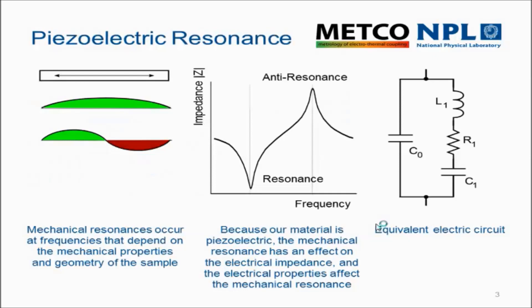So piezoelectric resonance — mechanically, if you take a piece of ceramic, it will have a number of mechanical resonance modes that depends on the mechanical properties of the material and its dimensions. Because it's a piezoelectric material, there's a coupling between the electrical and mechanical regimes, so at certain frequencies those resonances can be excited electrically and may have an effect on the electrical impedance. If we do a frequency sweep on a piezoelectric sample, we see the impedance goes to a very low value at the resonant frequency, and at the frequency slightly above that it goes to a maximum at the anti-resonance frequency.